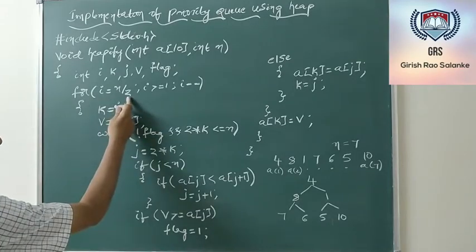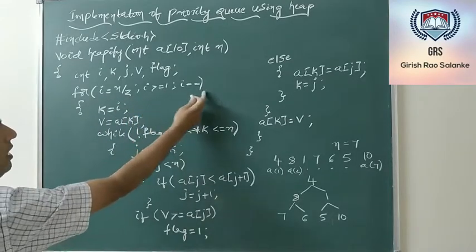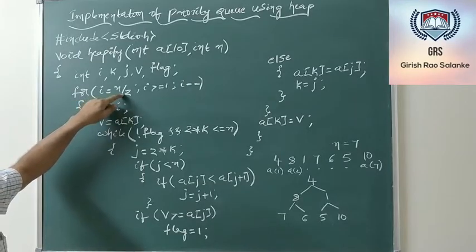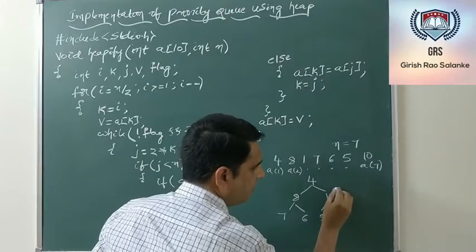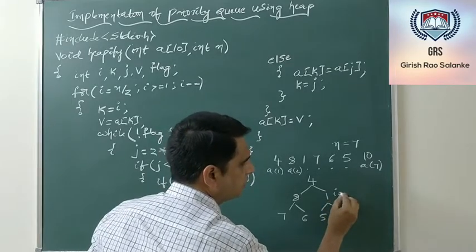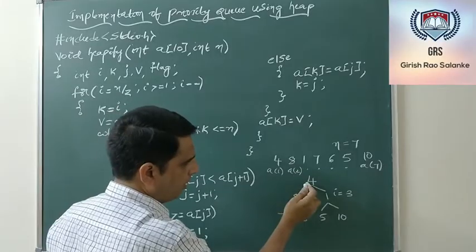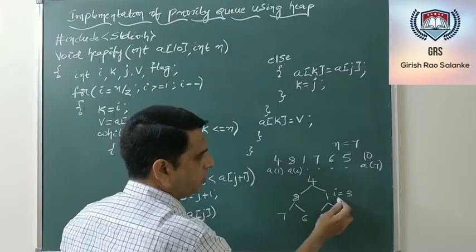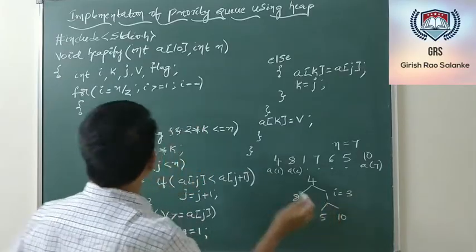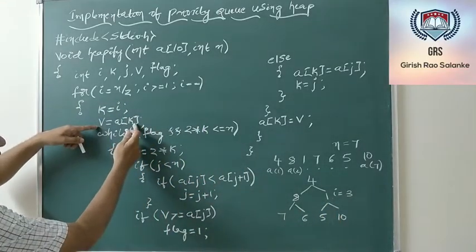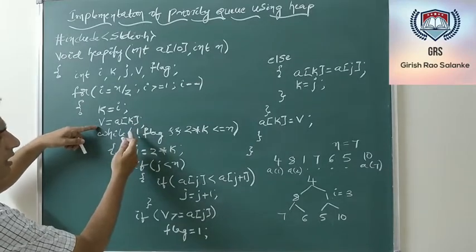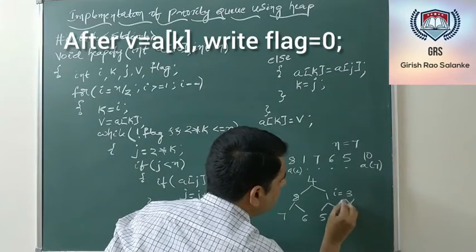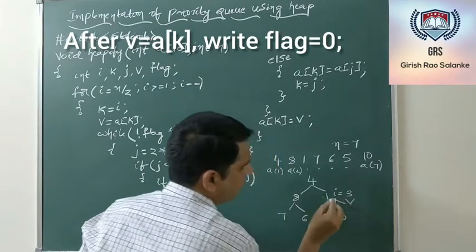I set k=i, so k=3, and v=a[k]=1. I check while flag is not set and 2k ≤ n. j=2k=6, so a[j]=5. Since j < n, I check if a[j] < a[j+1], i.e., 5 < 10 — yes, so j becomes 7. Now I check if v ≥ a[j]: 1 ≥ 10 — false. So I bring a[j]=10 to position a[k], then set k=j=7. This means 10 moves up to position 3, and 1 is stored as v to be placed later.